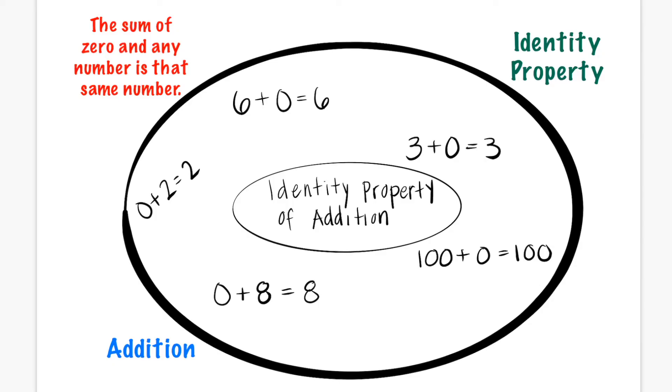Remember, the identity property of addition is all about 0. When you add any number plus 0, you get the other number. Let's take a look. You can also pause the video and add more examples.